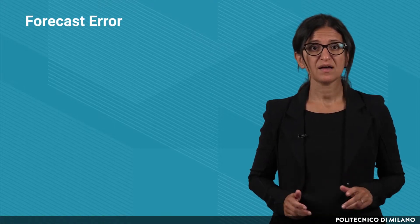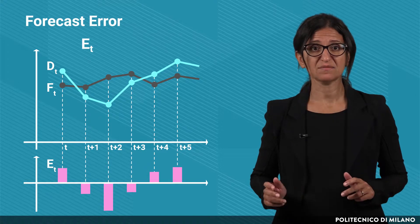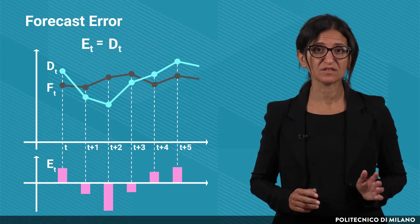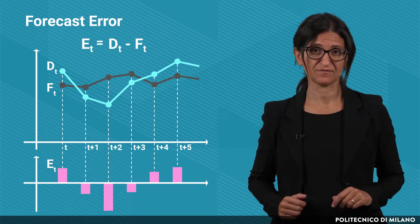In order to monitor the accuracy of the forecasting process, we can use multiple indicators. But first of all, we need to define how to measure the forecast errors. The forecast error at time t can be defined as the difference between the real value of the demand and the forecasted value at time t.